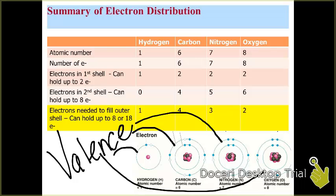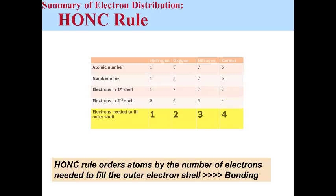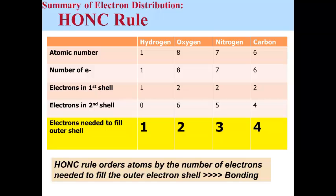If we arrange this table now into what's referred to as the HONC rule for electron distribution in the order of the number of electrons needed to fill the outer shell, that's a good rule for allowing us to know how many bonds can go to any of those individual atoms. For hydrogen, there's going to be one bond. For oxygen, it's two. For nitrogen, it's three. And carbon, it's four. So knowing the HONC rule will be helpful to you as you begin to start building molecules.